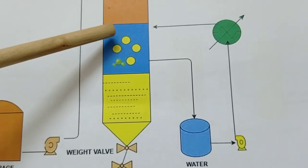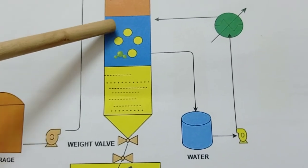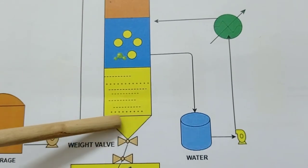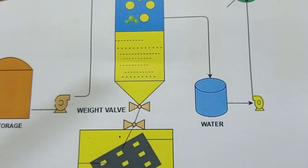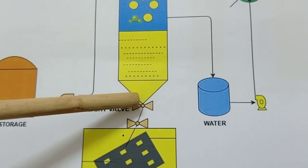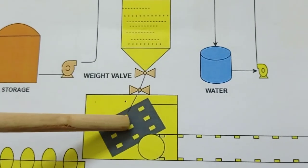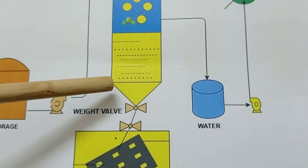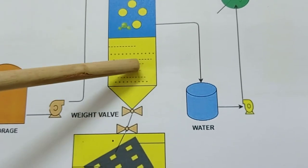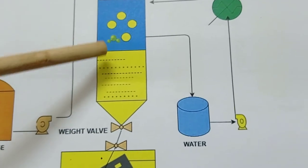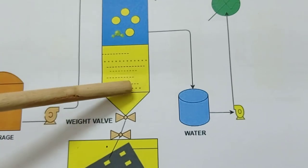Once the sulfur enters the water bath it forms a spherical or circular shape and gets collected at the bottom. This collection point has what is called a weight wall. The weight wall works on weight: we set an exact weight threshold, and when the accumulated sulfur exceeds that weight, the wall opens and sulfur is discharged to the vibratory screen. When weight reduces, the wall closes again.